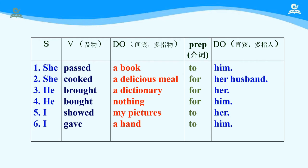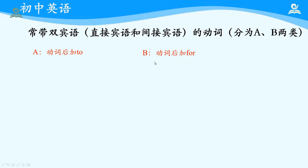但是当间接宾语放在直接宾语的后面时，我们通常要用介词来连接。例如：She passed a book to him. She cooked a delicious meal for her husband. He brought a dictionary for her. He bought nothing for him. I showed my pictures to her. I gave a hand to him. 介词基本分为两大类：动词后面加 to，或动词后面加 for。